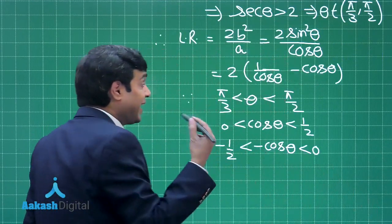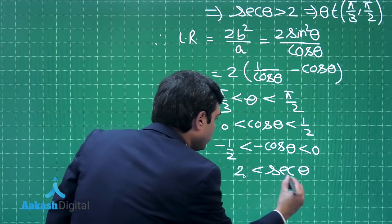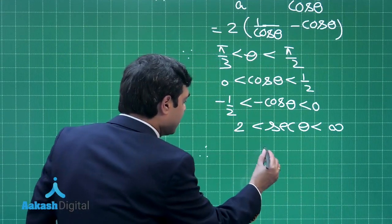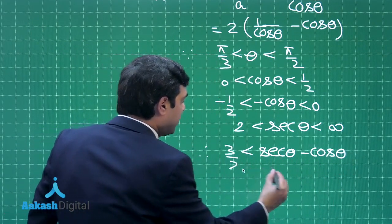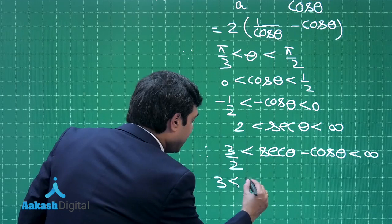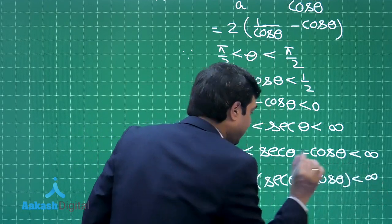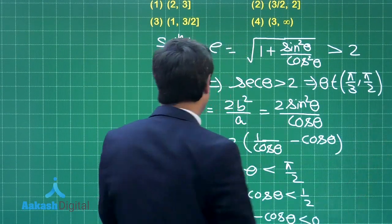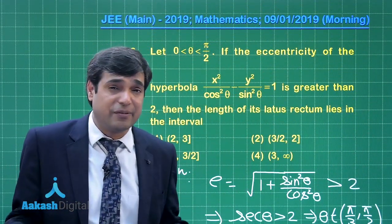Moving ahead, sec θ = 1/cos θ, meaning sec θ is between 2 and infinity. Just add the two - therefore, on adding, sec θ - cos θ is in the interval 3/2 to infinity. If you multiply both sides by 2, you are getting 3 < 2(sec θ - cos θ) < infinity. What is this 2 sec θ - cos θ? This is the length of the latus rectum as required. So what interval we are getting?